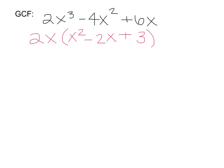Then you want to look inside the parentheses to see if you can factor it more. Are there two numbers that multiply to positive 3 that add to negative 2? The only way you would get to negative 2 was if you had negative 3 and positive 1, and there's no way those two things are going to multiply together to give you that positive 3, so you are all done with this problem.